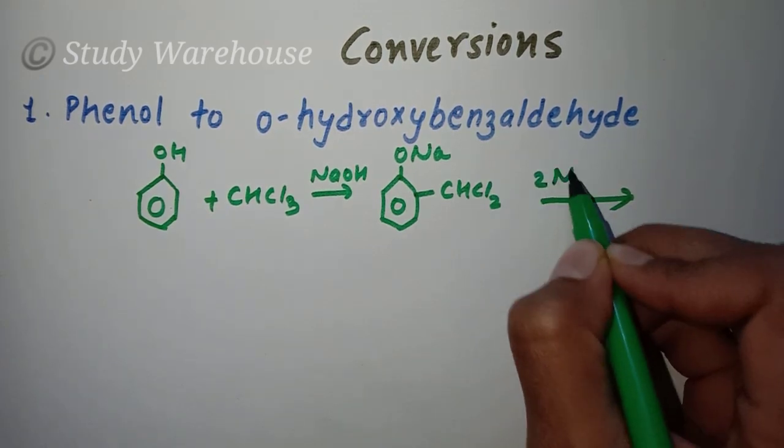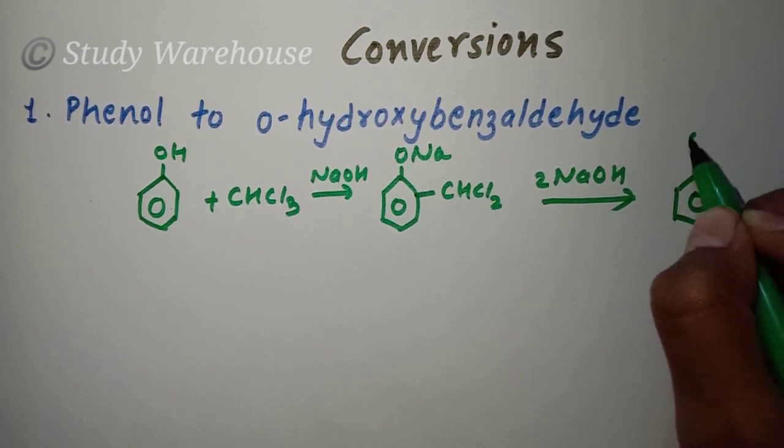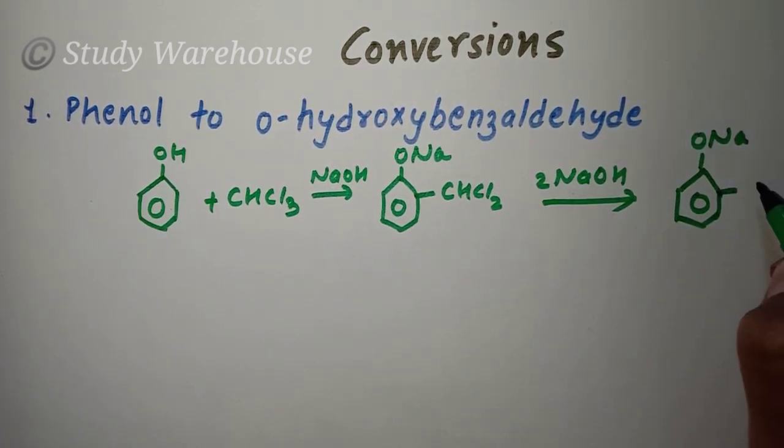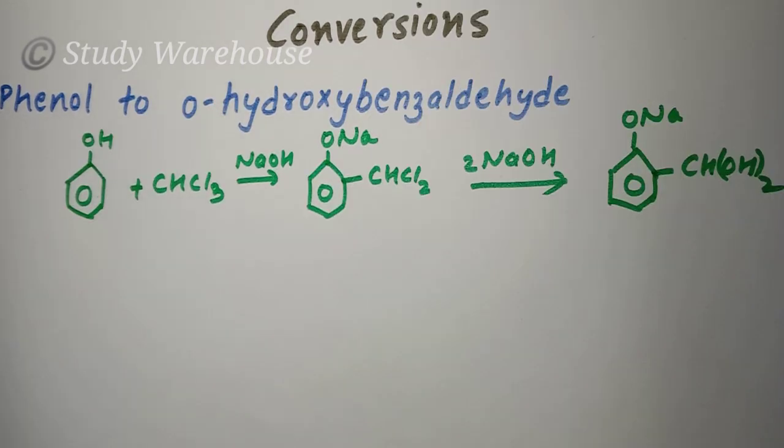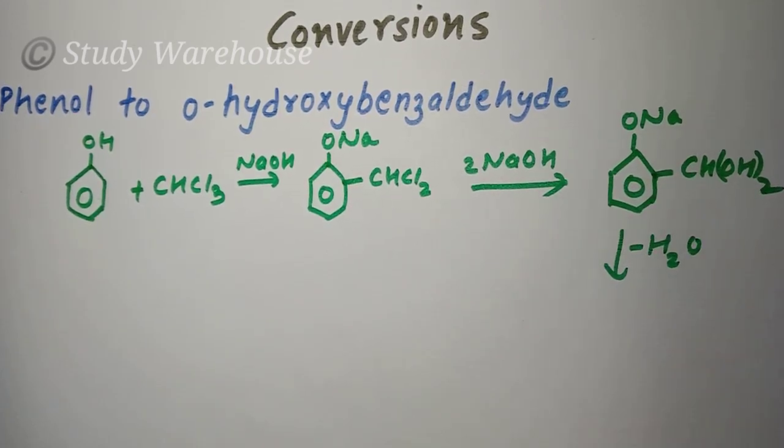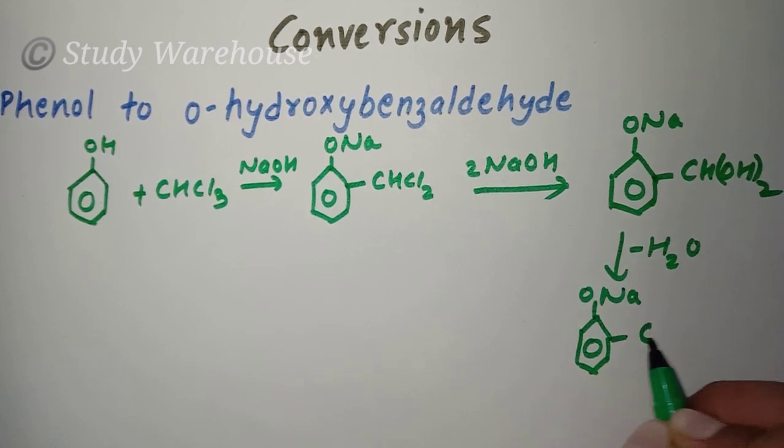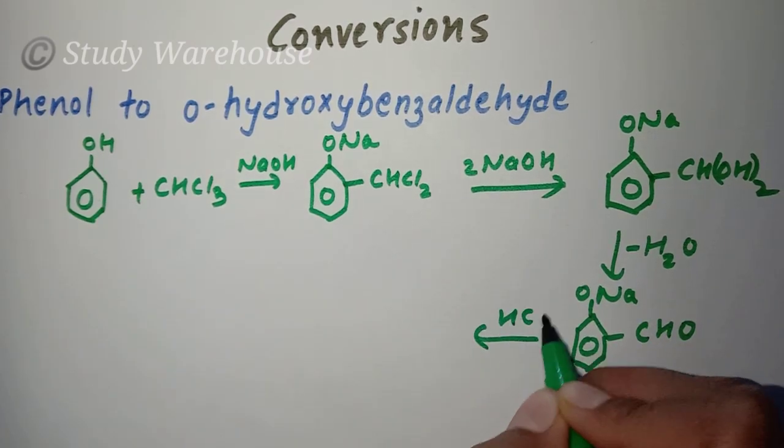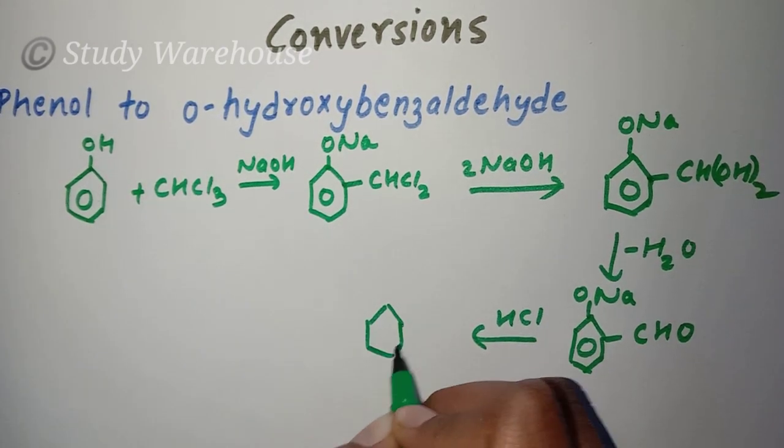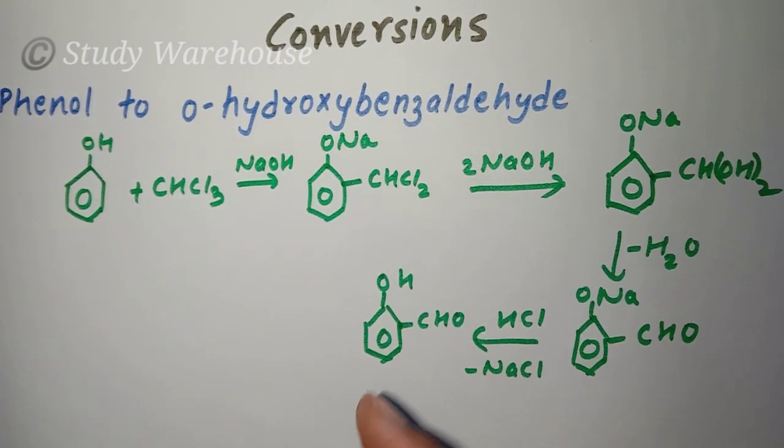Then after that, we will take 2NaOH so that ONa will be replaced here. So here is CHOH twice. If you remove H2O, we will get only CHO. We need ortho-hydroxy, which means we will react with HCl and here we will get OH. This is your ortho-hydroxybenzaldehyde or salicylic aldehyde.